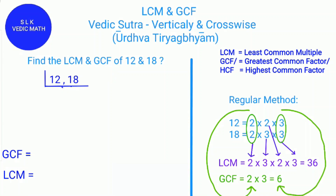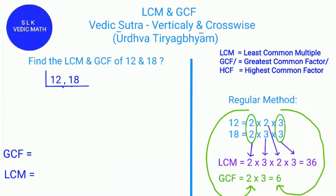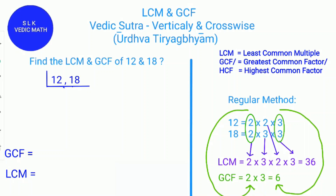The meaning of LCM: when a number is multiplied by another number which is a natural number, the product is a multiple of that number. Any multiples that are the same for two or more numbers are called common multiples. The lowest of those common multiples is called the least common multiple.